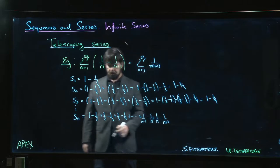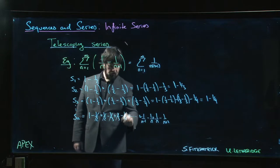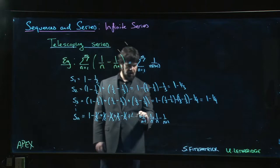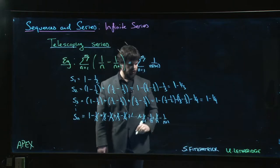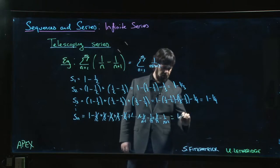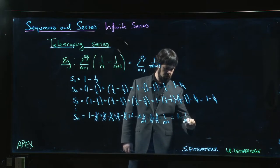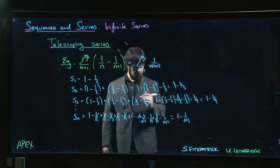And so basically everything cancels. There's a quarter there that will cancel with that. Those will cancel. Those will cancel. And you just get 1 minus 1 over n plus 1.